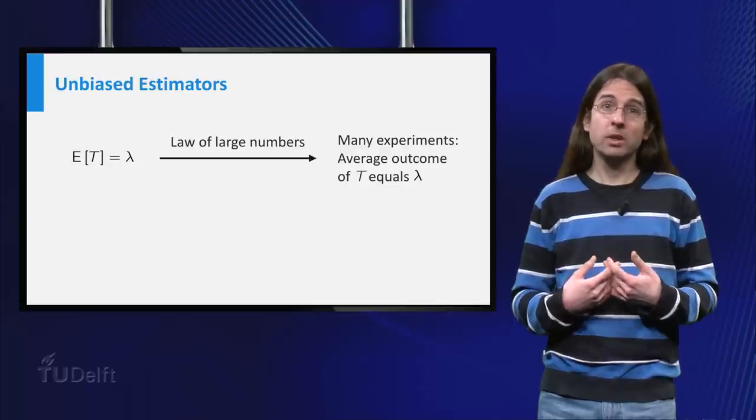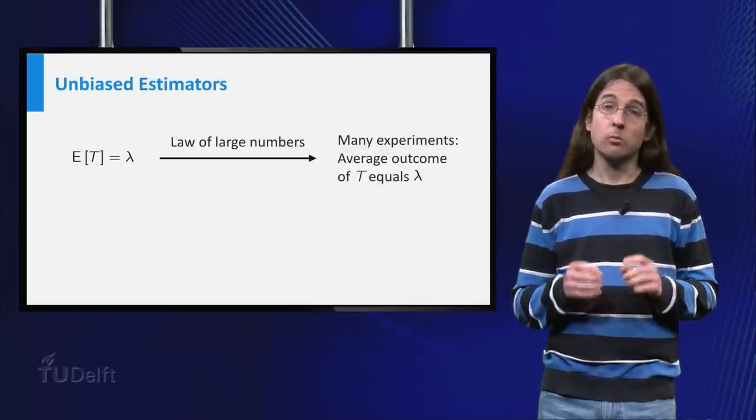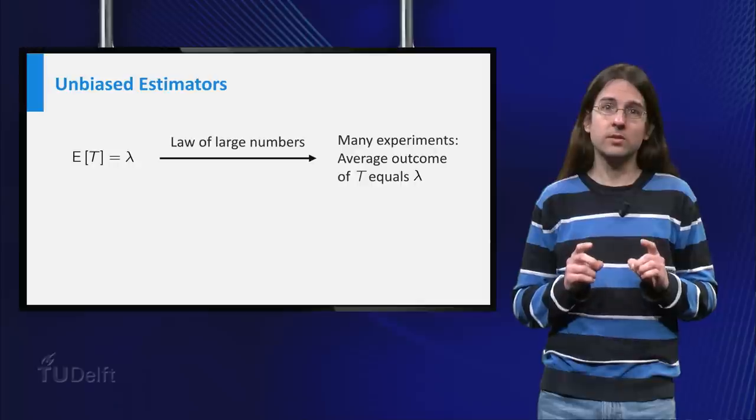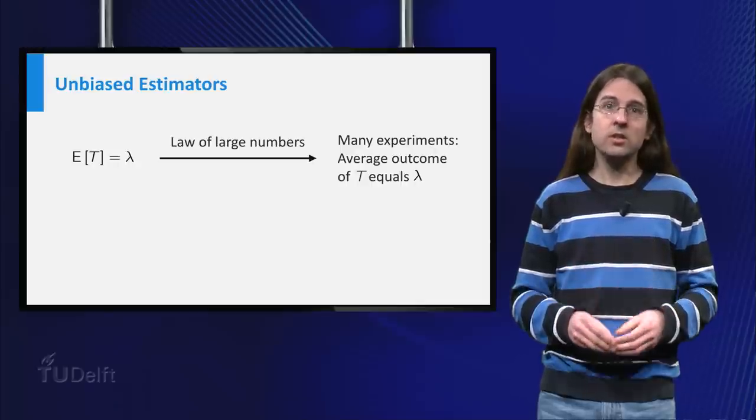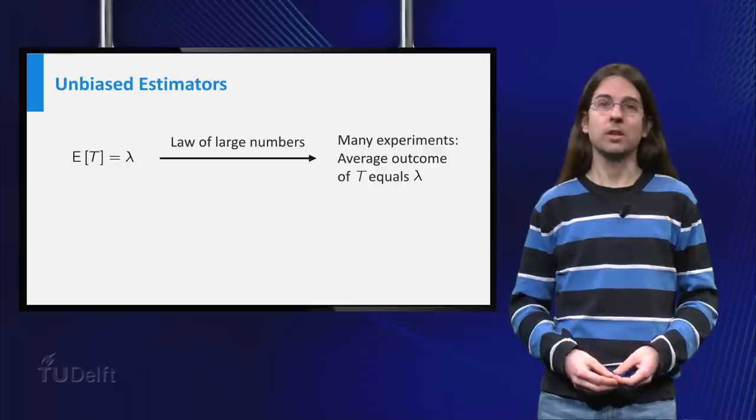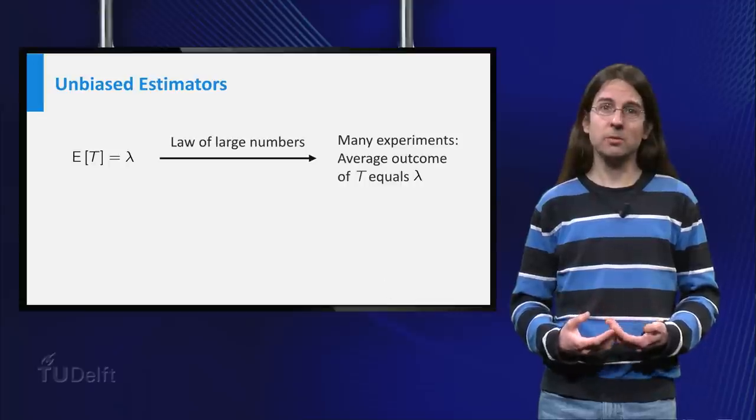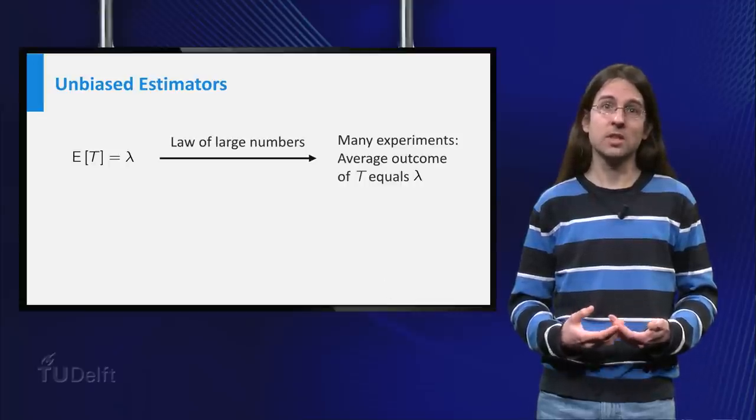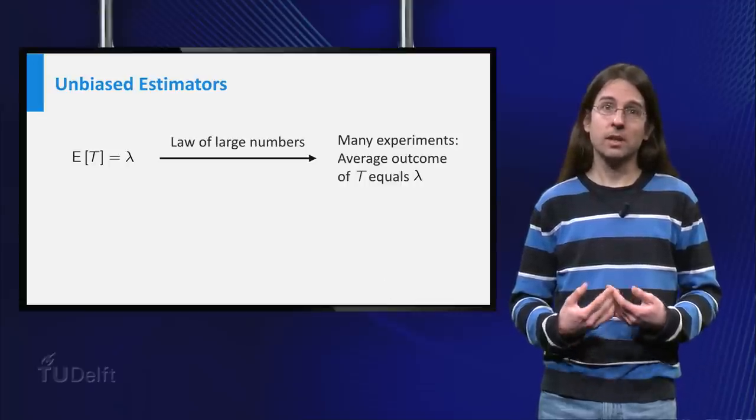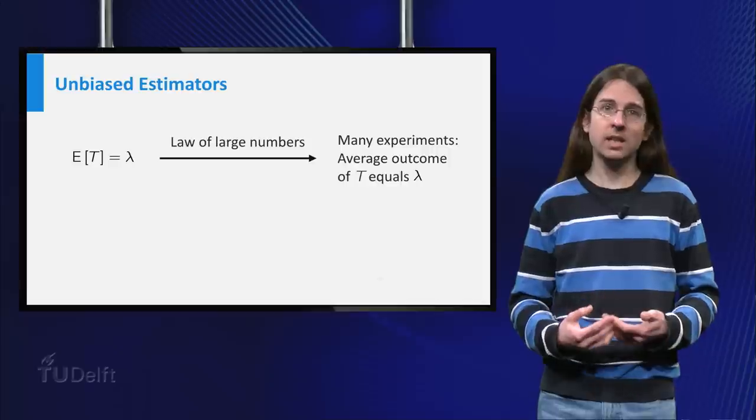One reasonable thing we could demand is that, whatever the true value of lambda is, the expectation of the estimator equals lambda. This means that if you were to repeat the experiment of measuring the 12 decay times many times over, and calculate the estimator again and again, your average estimate should approach lambda.